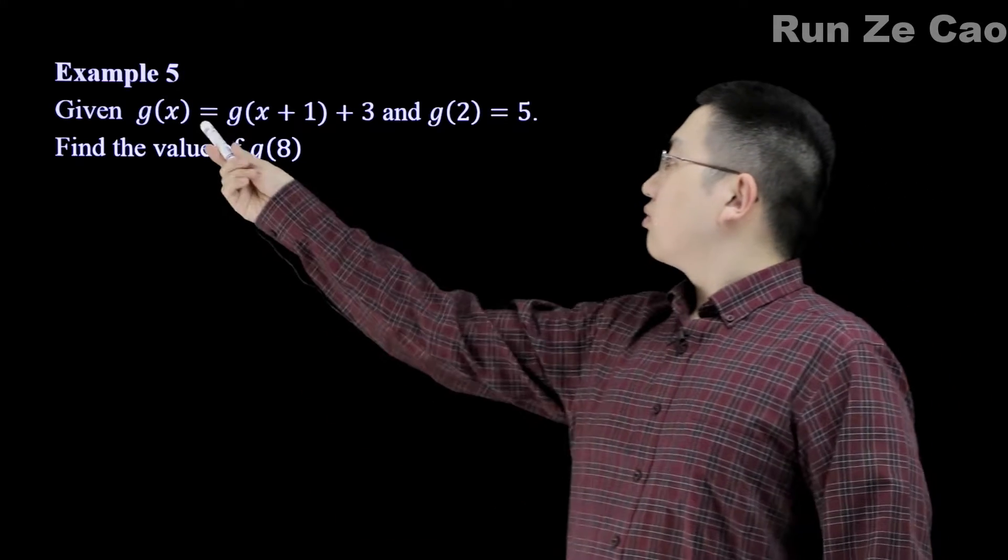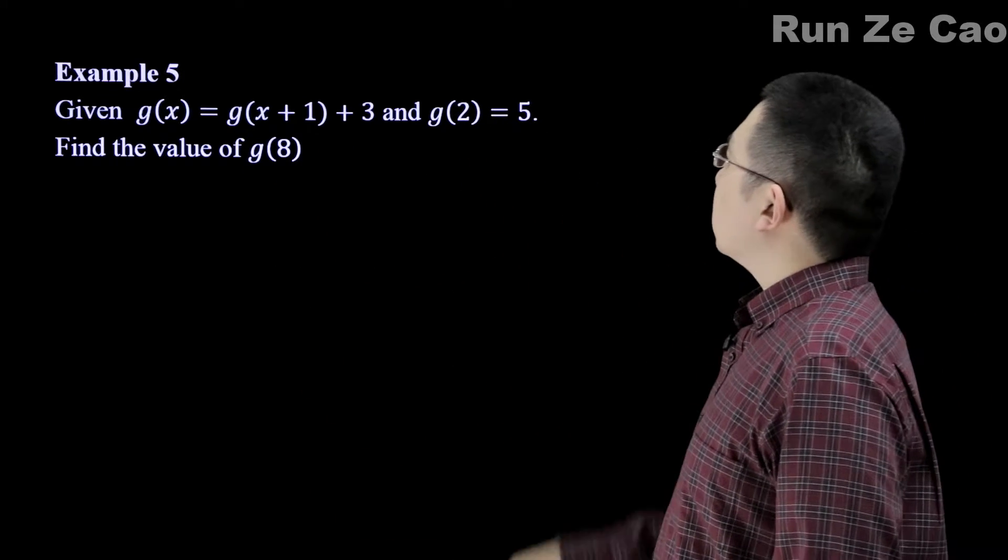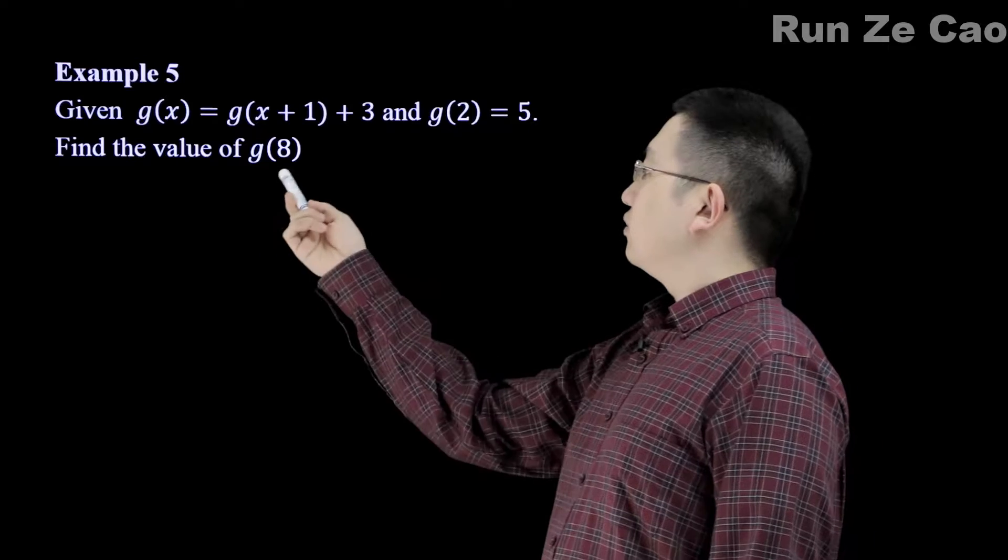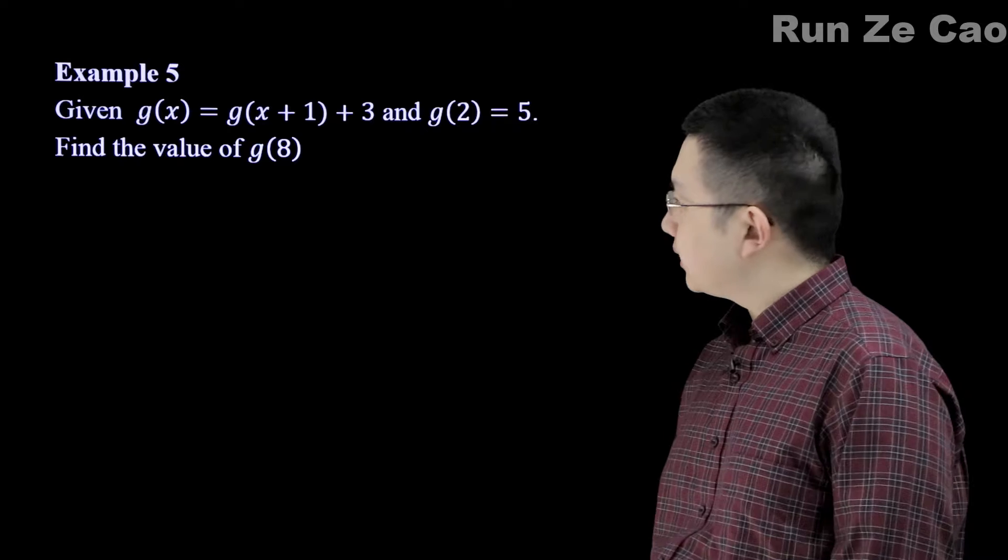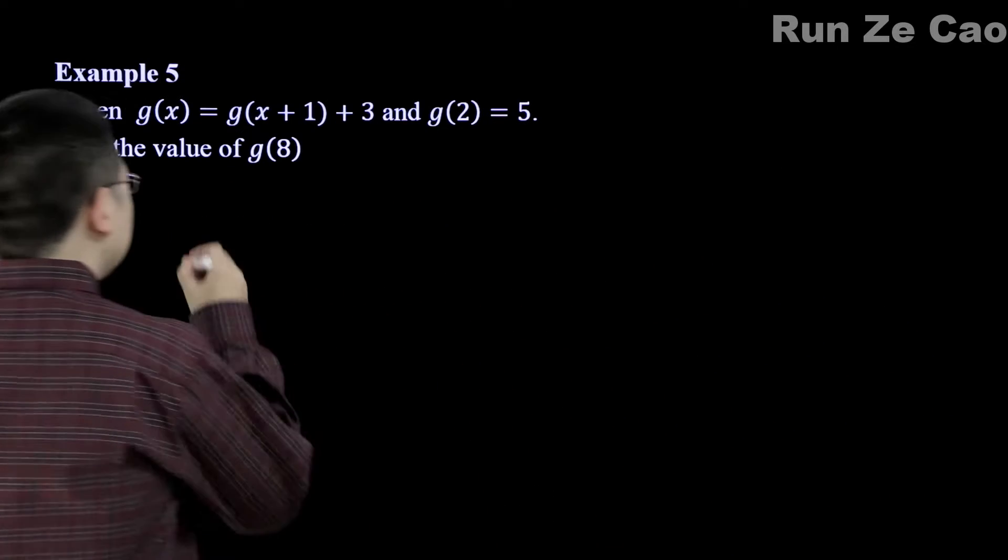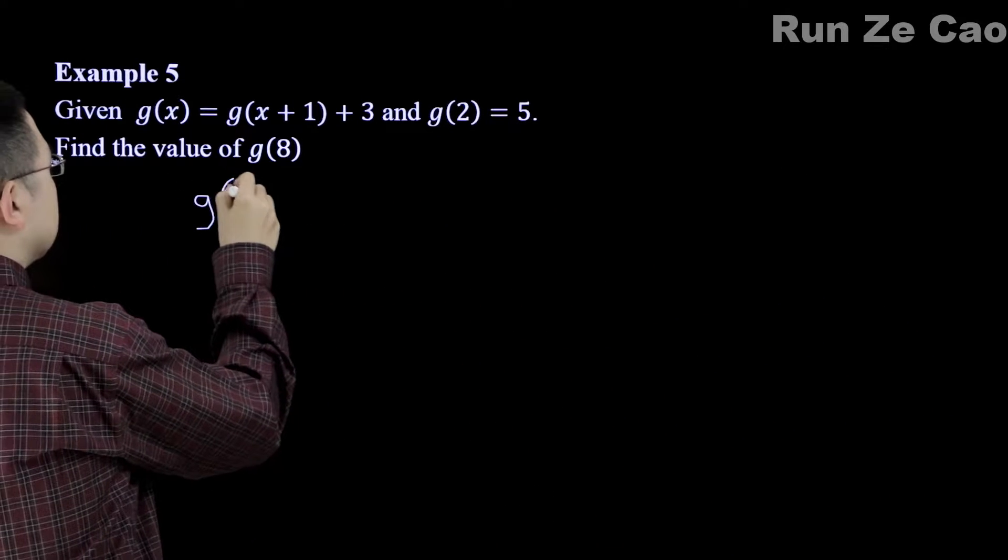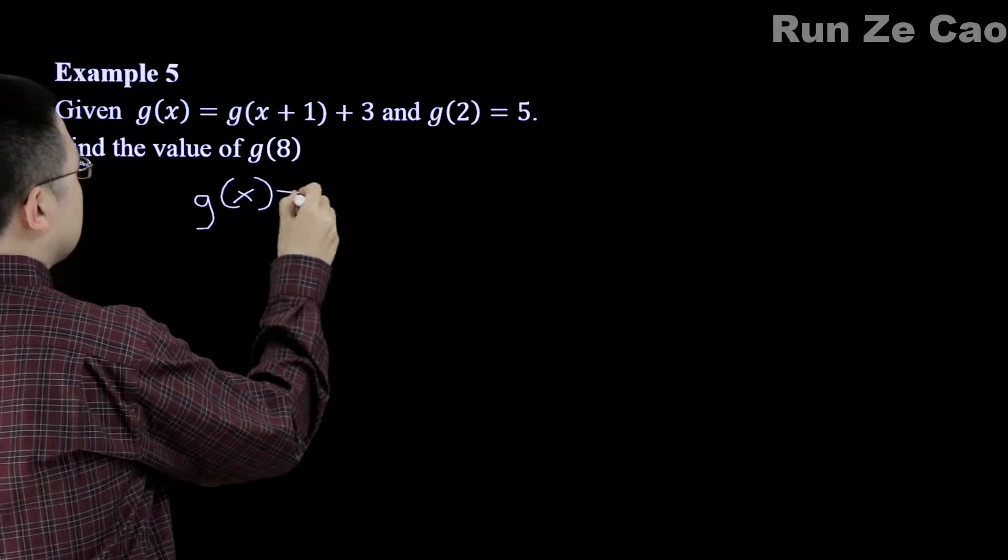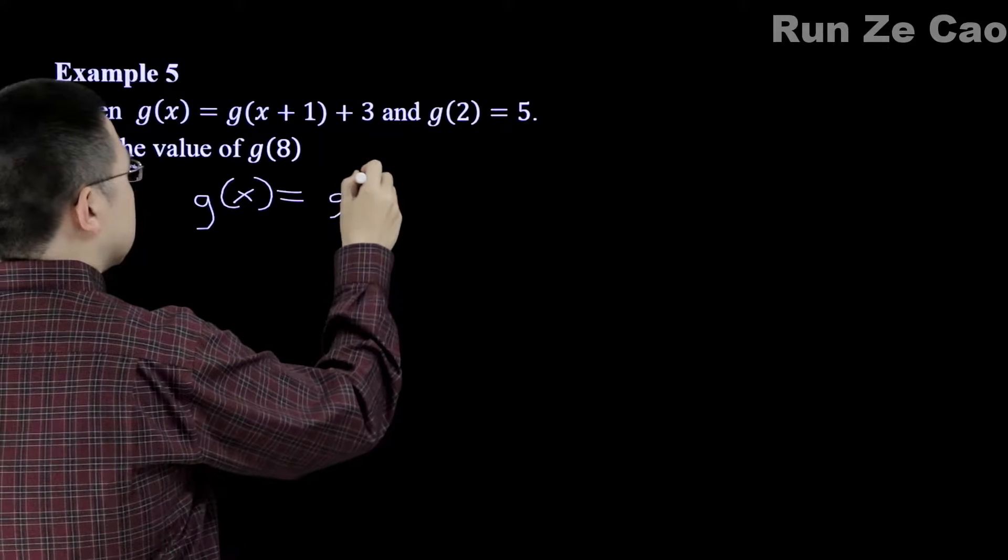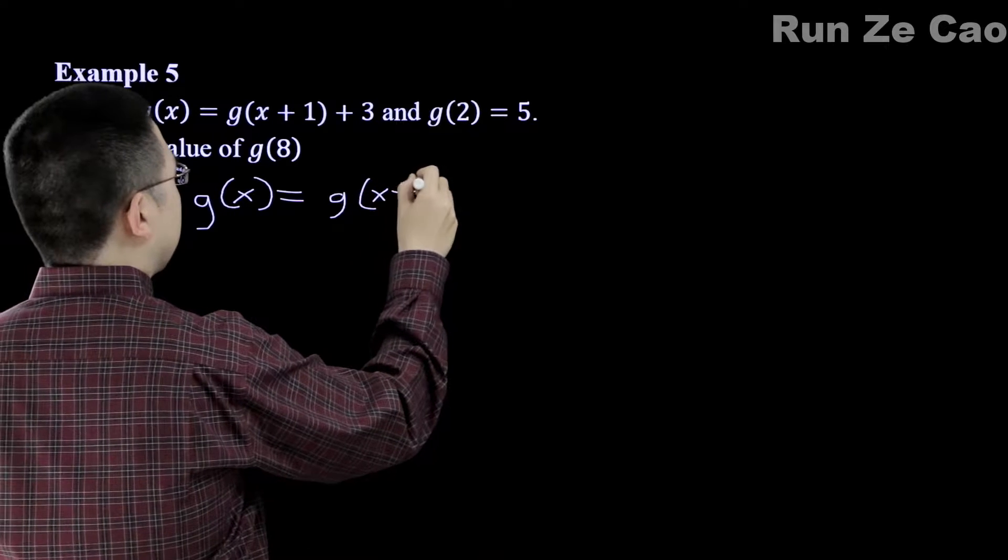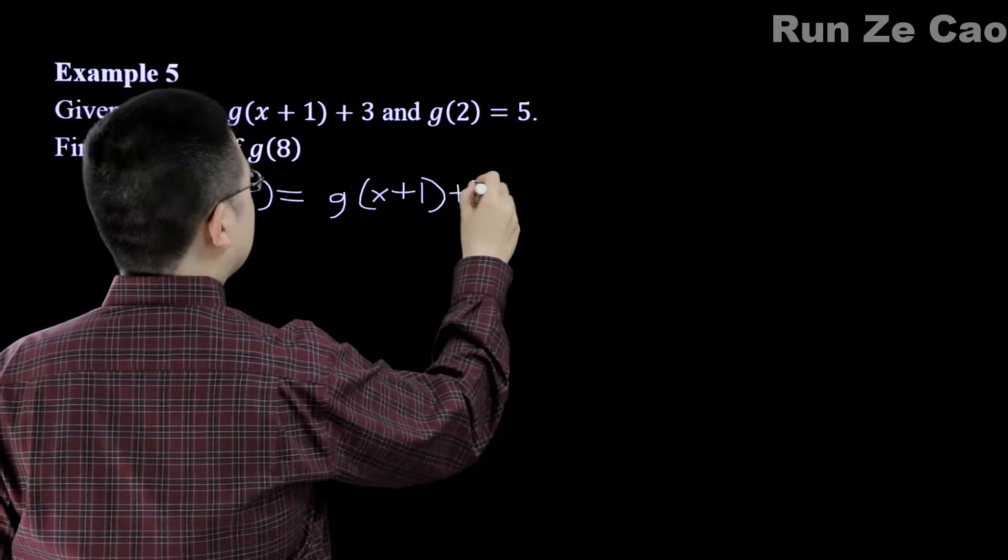Given this relationship and g(2) is equal to 5, find the value of g(8). What does this relationship actually give us? So suppose we do this, g(x) equals g(x + 1) plus 3.